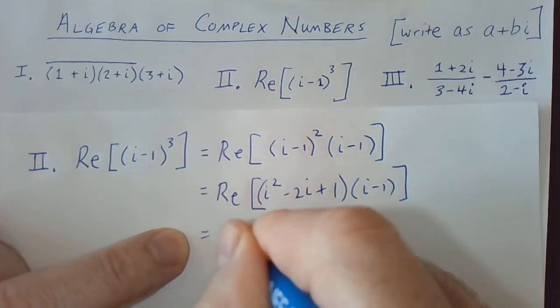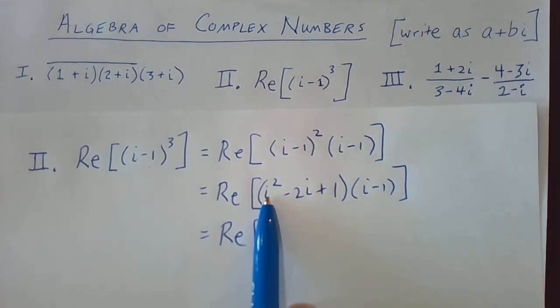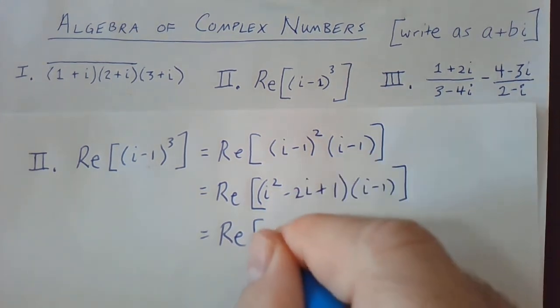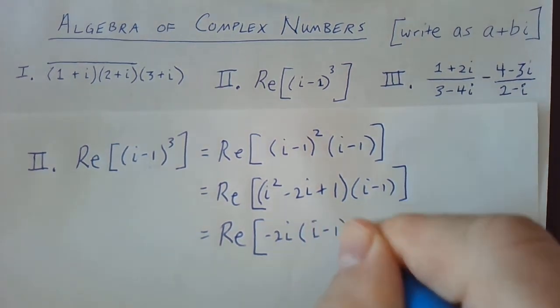So that gives us the real part of—well, i squared is just negative 1. So this is negative 1 and 1 cancels out to 0. This gives me negative 2i times i minus 1.